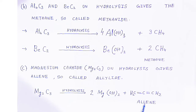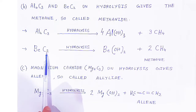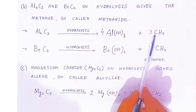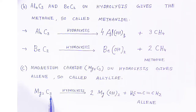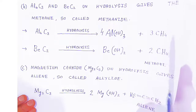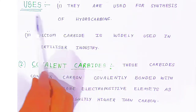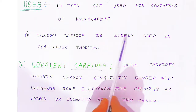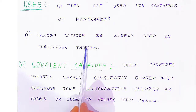Magnesium carbide on hydrolysis — adding water molecules — gives magnesium hydroxide and allene (C₃H₄), which is a three-carbon unsaturated compound with a double bond. The uses of ionic carbides: they are used for synthesis of hydrocarbons, as we have seen in the properties. Calcium carbide is also widely used in the fertilizer industry.